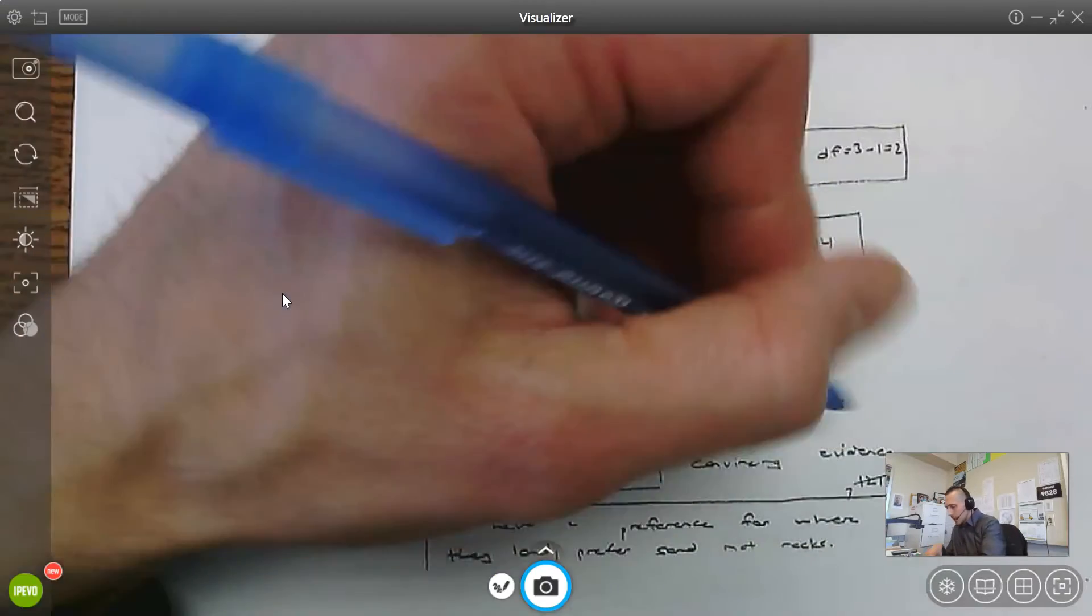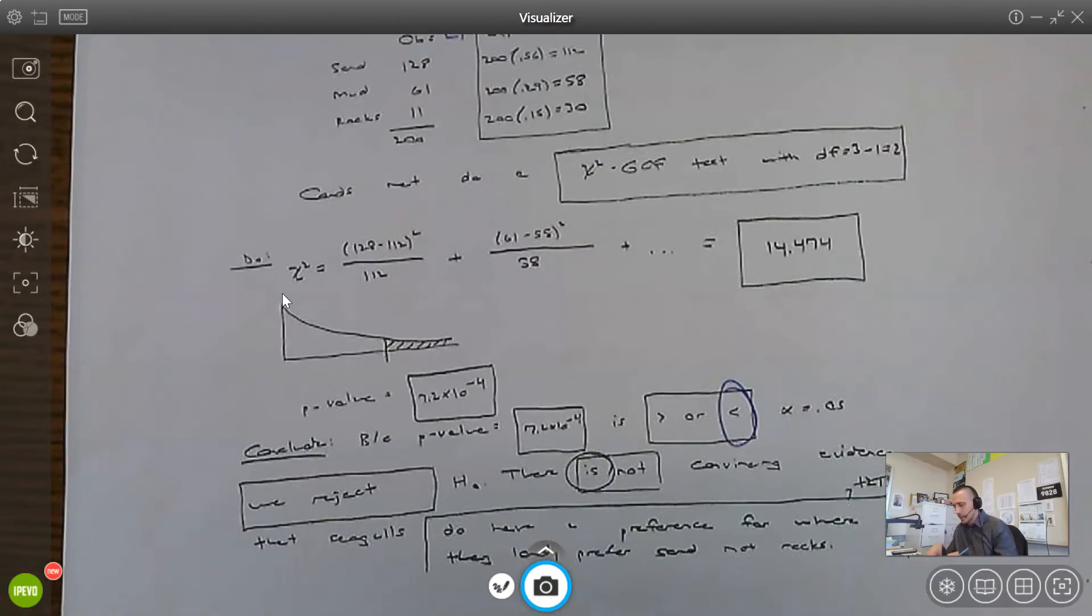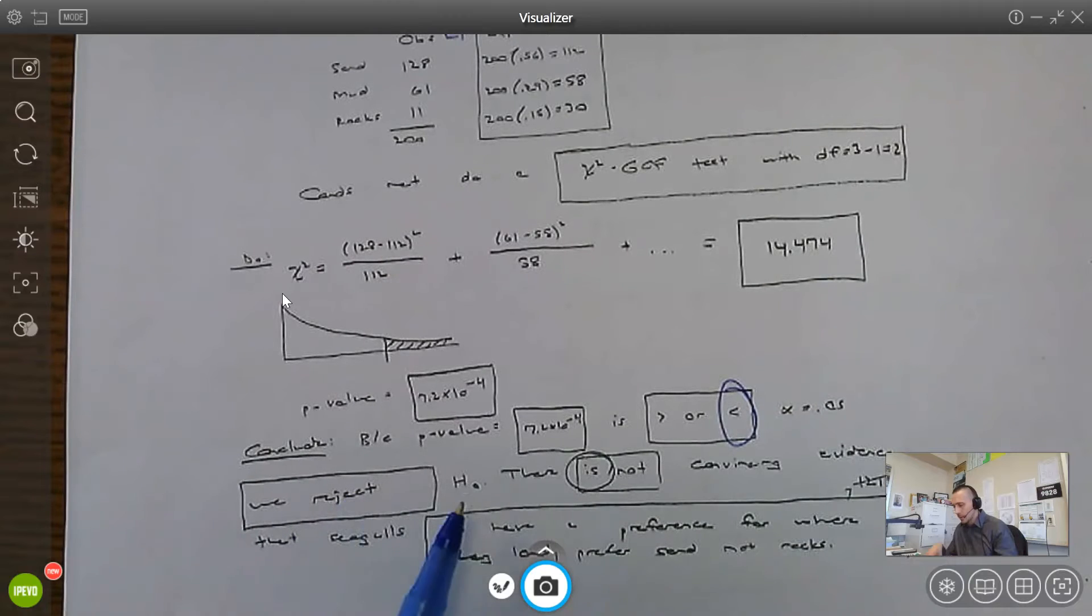So the p-value is less than the significance level. So we reject the null, which means there is convincing evidence that the seagulls do have a preference for where they land.